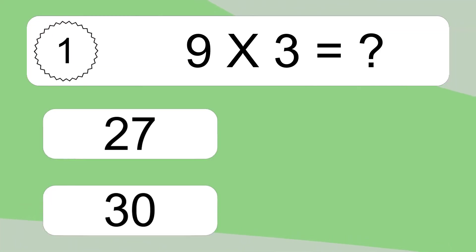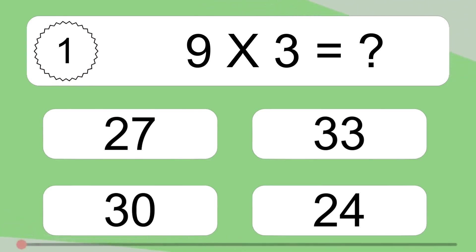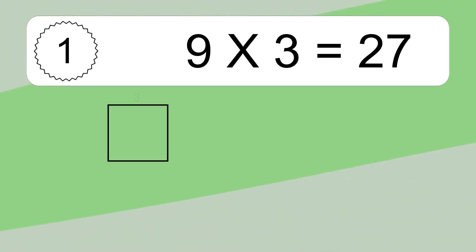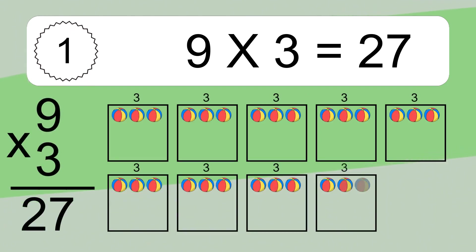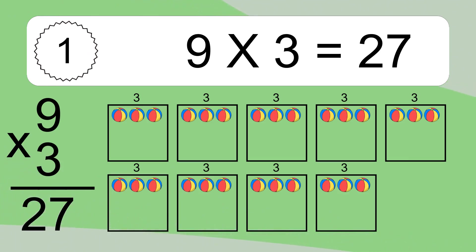Nine times three equals what? Nine times three equals 27. We have nine boxes, and each box has three colorful balls inside. If you count all the balls in all the boxes together, you will have nine times three balls. This equals 27 balls.